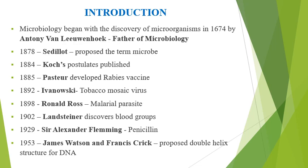It was Ronald Ross in the year 1898 who discovered the malarial parasite in the salivary glands of the Anopheles mosquito. In the year 1902, Landsteiner discovered the blood groups. In the year 1929, Alexander Fleming discovered the famous antibiotic penicillin — he is known as the father of antibiotics. And the most important event in molecular biology goes to James Watson and Francis Crick, who proposed the double helical structure of DNA.